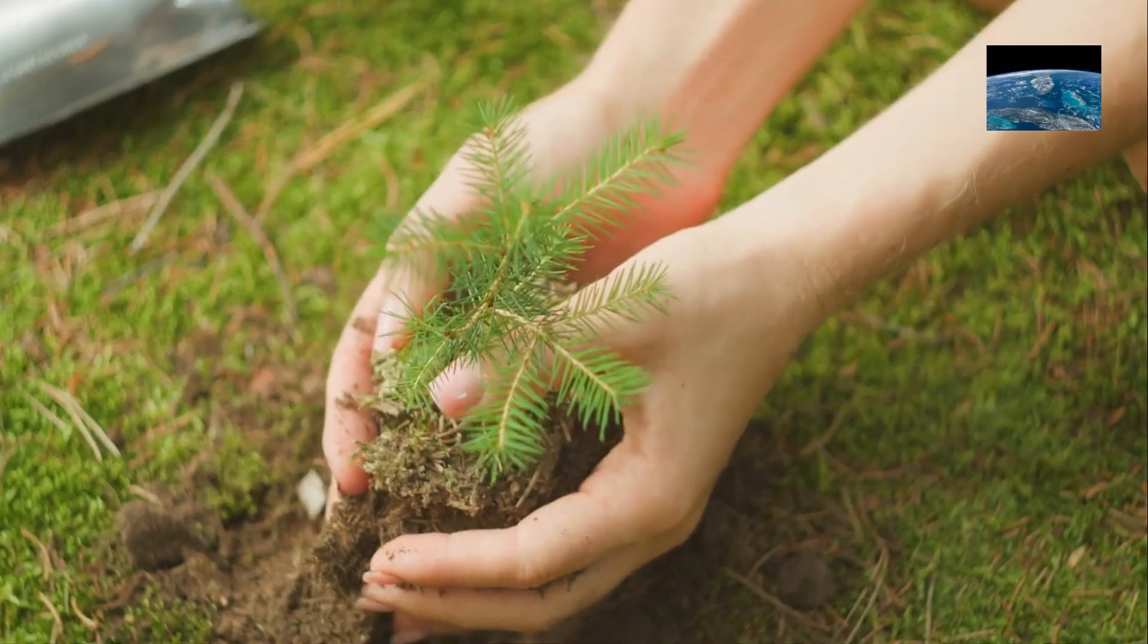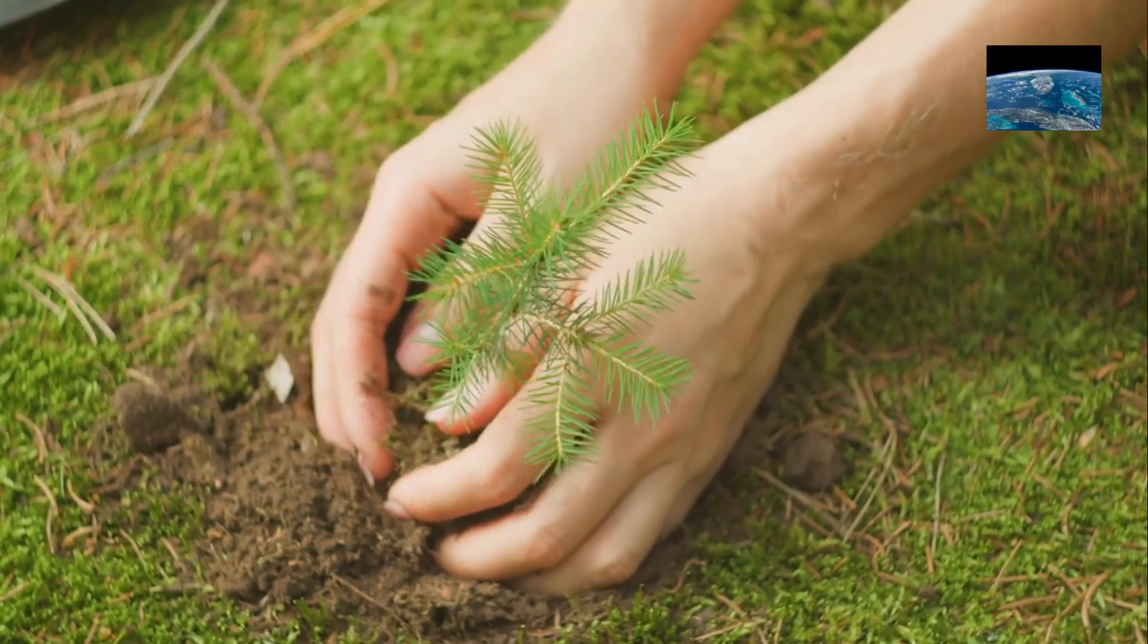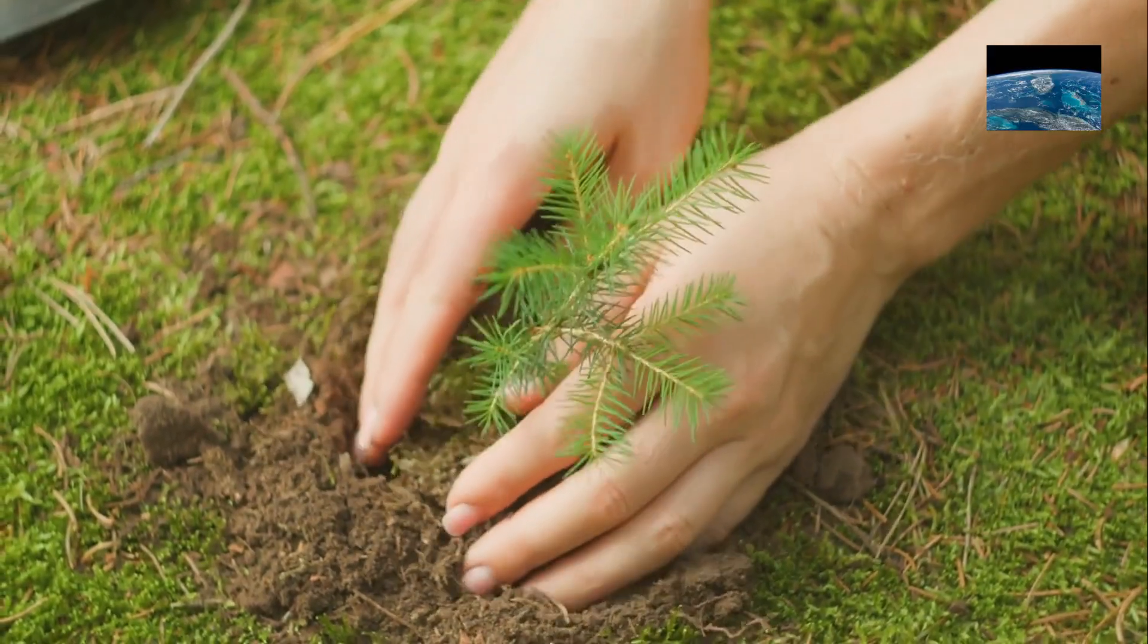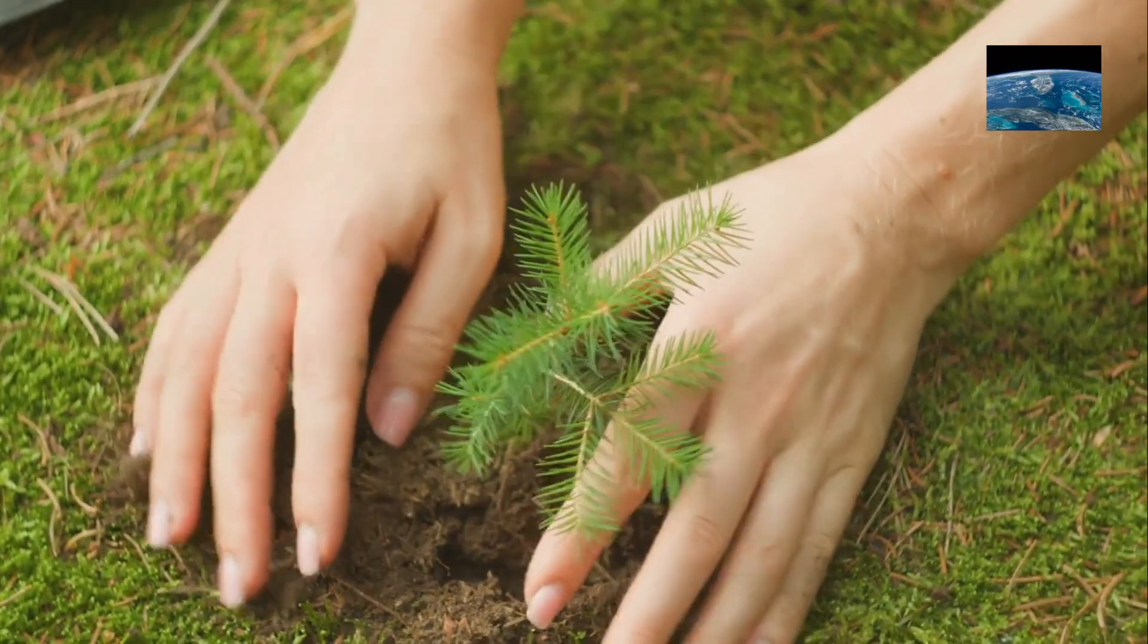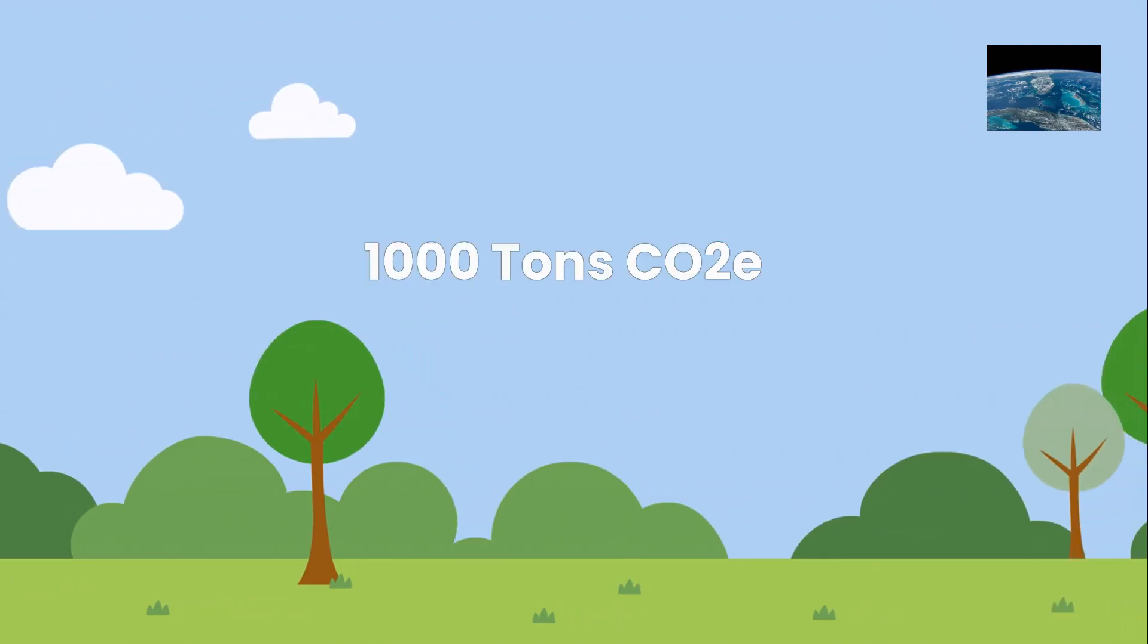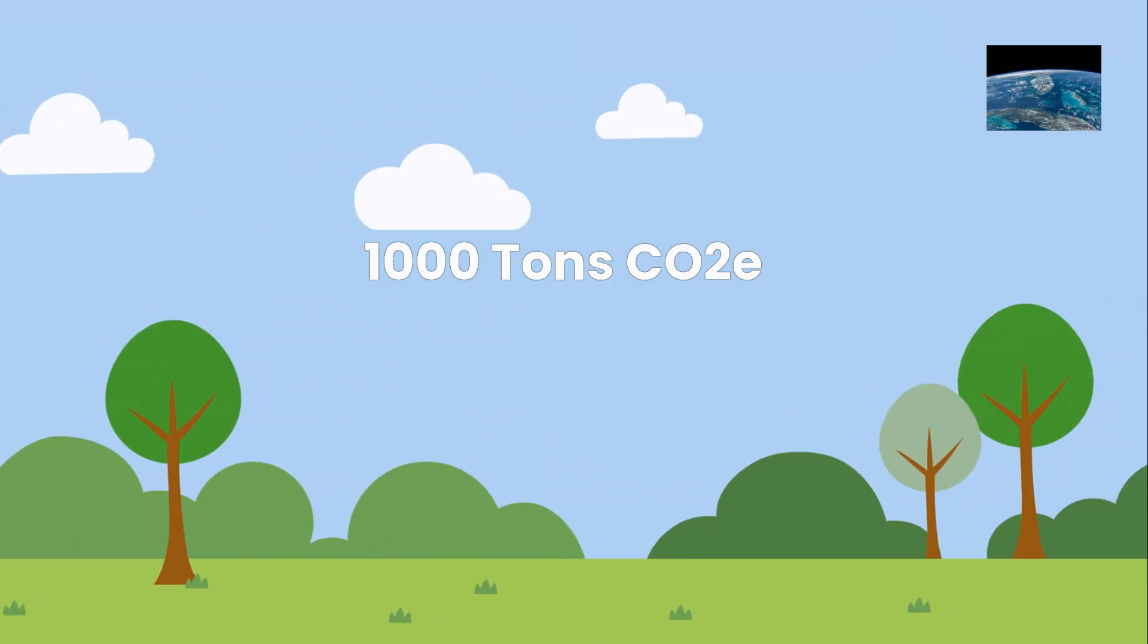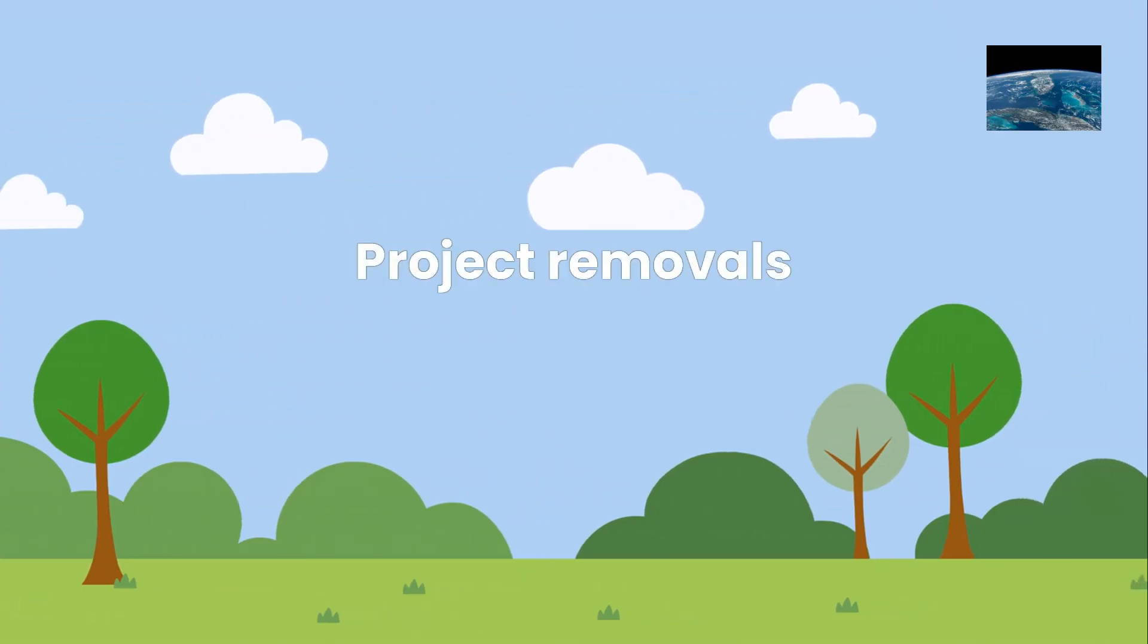Now, we roll up our sleeves and plant 1,000 trees on this land. Over their lifetimes, these trees will suck up CO2. Let's say each tree absorbs one ton of CO2. Do the math, and that's 1,000 tons of CO2 removed by the project. That's what we call project removals.